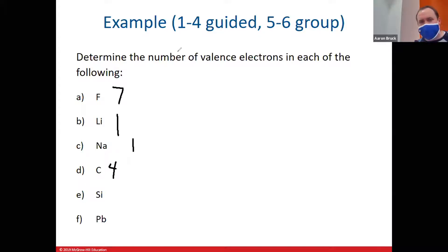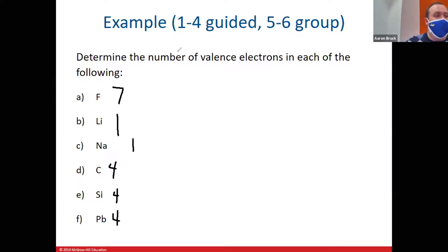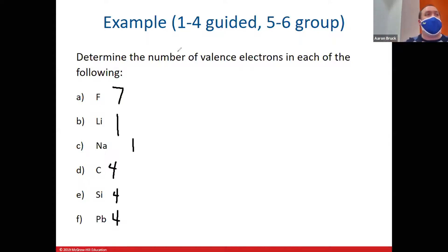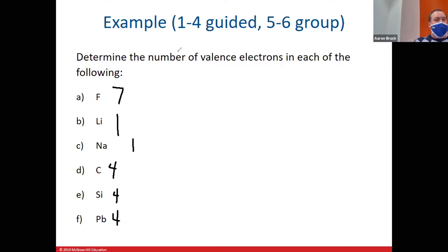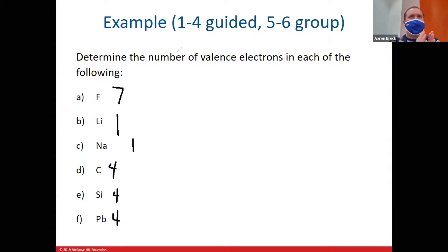The answers to both silicon and lead were four. This speaks to a general property: elements in the same column, the same family, have similar electron configurations — which is one of the reasons why they have similar chemical properties. We can tie their properties to their electron configurations and the way those electrons are arranged. We're moving from the specific idea of electron configuration to the more generalized idea of valence electrons.